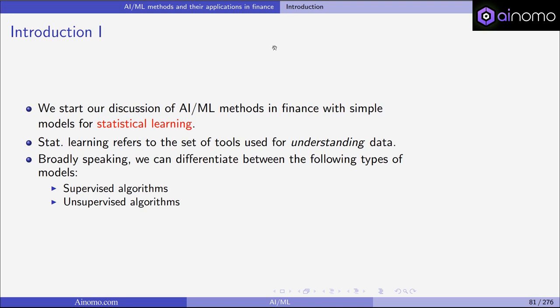All of these methods are examples of statistical learning algorithms. Statistical learning refers to the set of tools used for understanding data and explaining behavior of statistical data. Broadly speaking, we can distinguish two types of models in statistical learning: supervised algorithms and, in contrast, unsupervised algorithms.